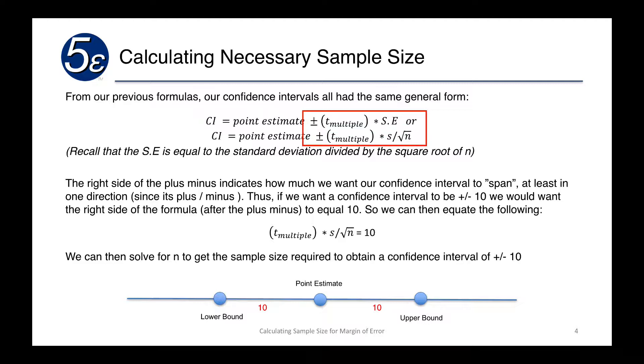The right side of the plus minus indicates how much we want our confidence interval to span, at least in one direction, plus or minus.